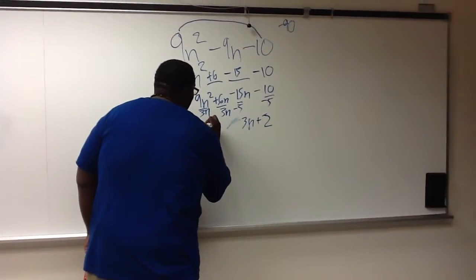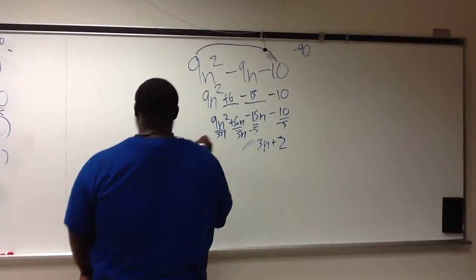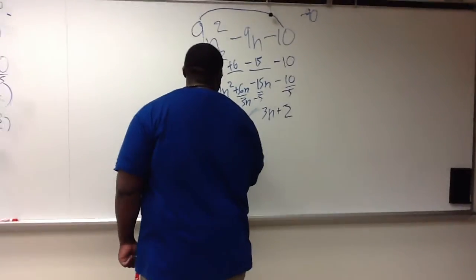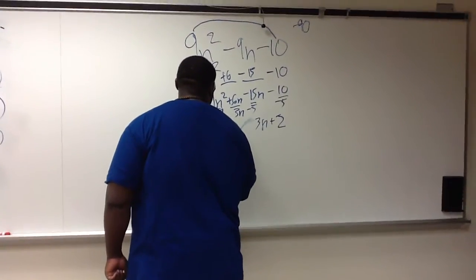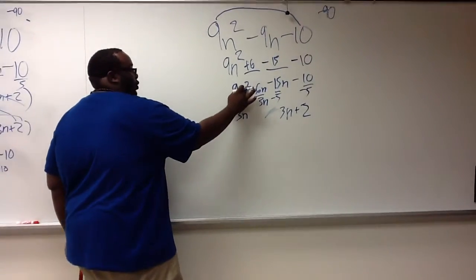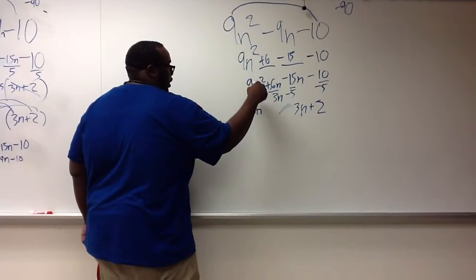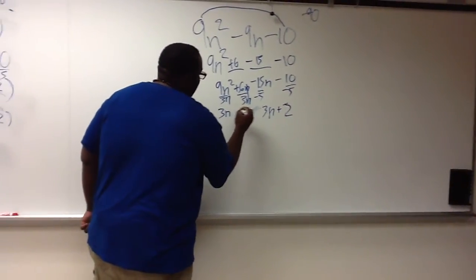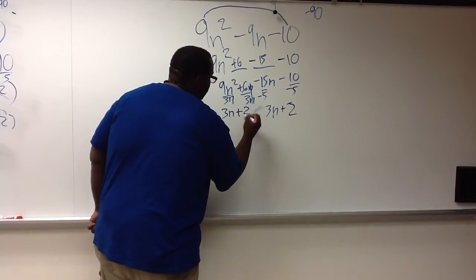You now have 3n, because this is square, so you only could take 1n out of that. And these cancel out, and these cancel out, and you now have plus 2.